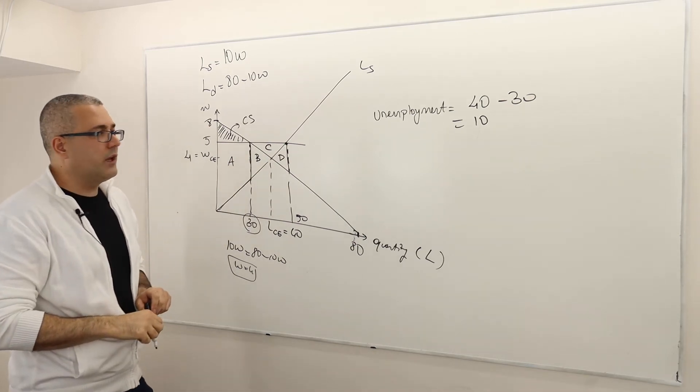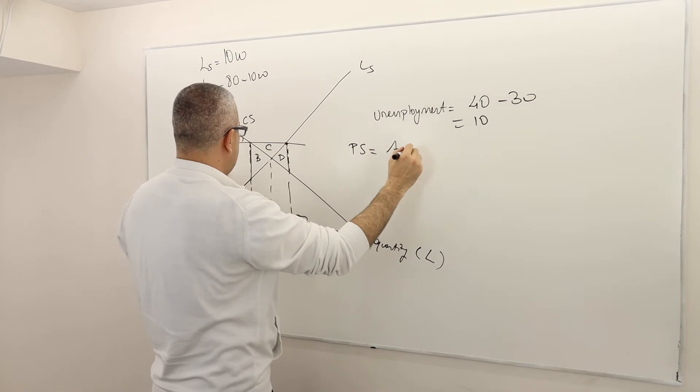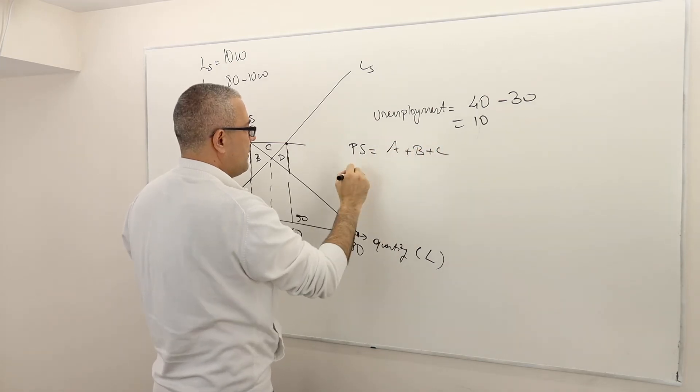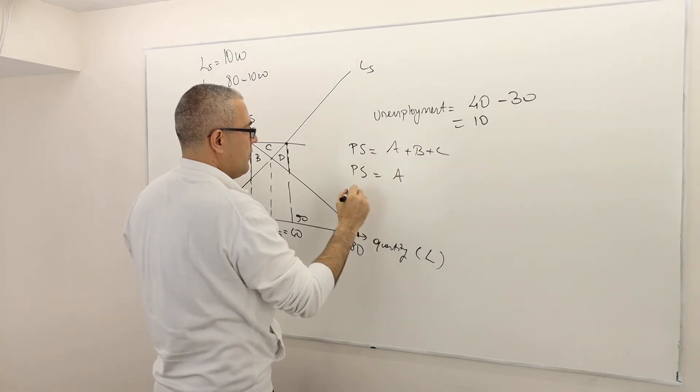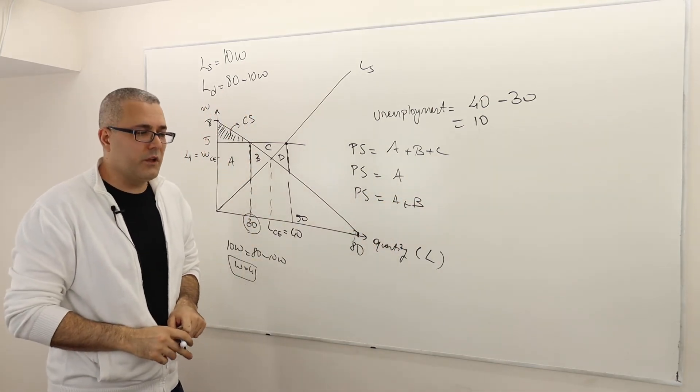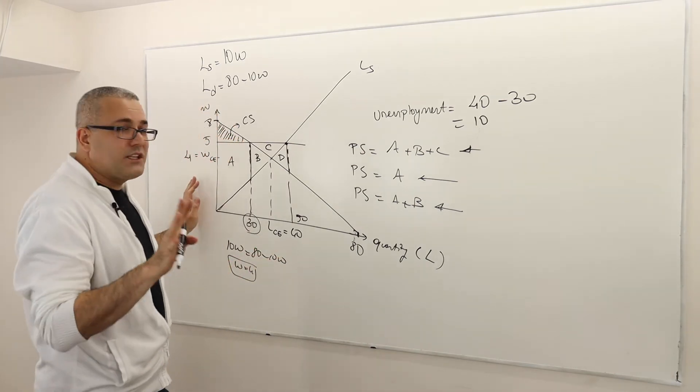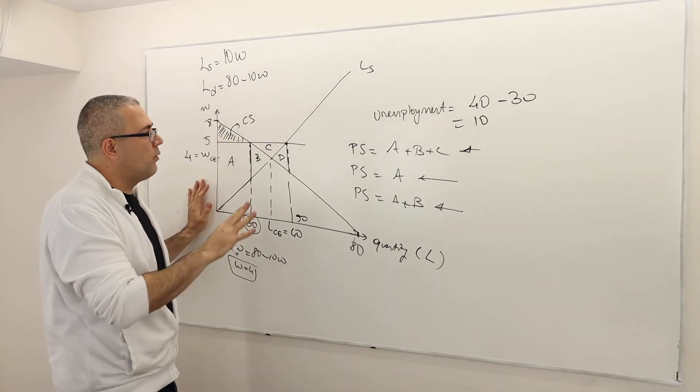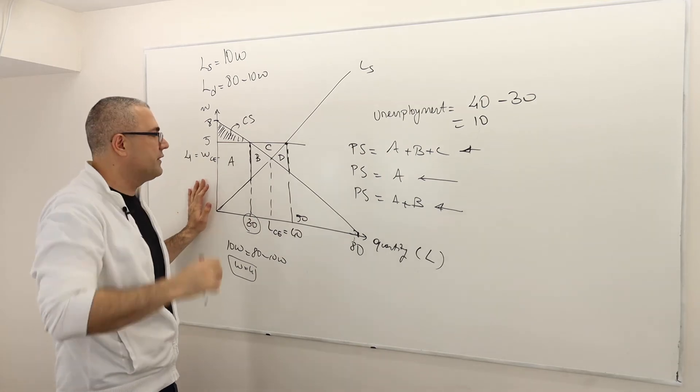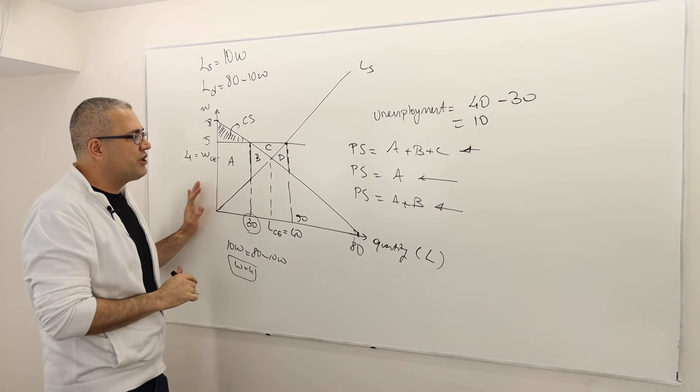So what do you think? What is the producer surplus? Is it A plus B plus C? Or is it A? Or is it A plus B? What do you say? Okay, there are three candidates now. So that's good. Thank you very much for all these variations. So here, the producer surplus is just A. Meaning this area.